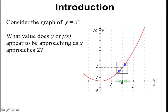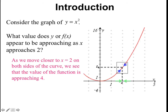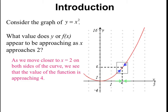We call the x value that we are getting close to A, and whatever that y value or function value is, we call L. So we can say as we move closer to x equals 2 on both sides of the curve, we see that the value of the function is approaching 4. This leads into the definition of a limit.